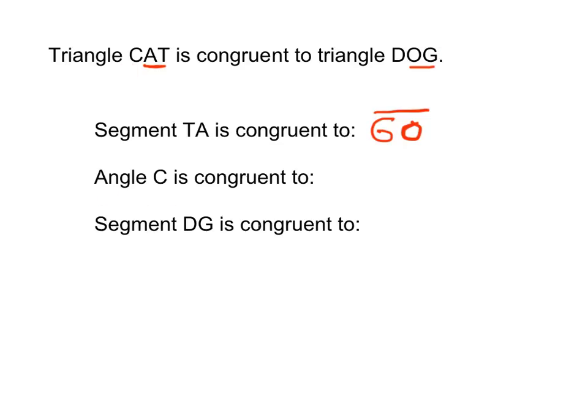Angle C, well angle C is that first angle, and it corresponds with the first angle in DOG. So angle C is congruent to angle D.